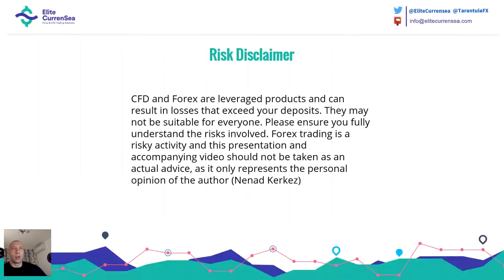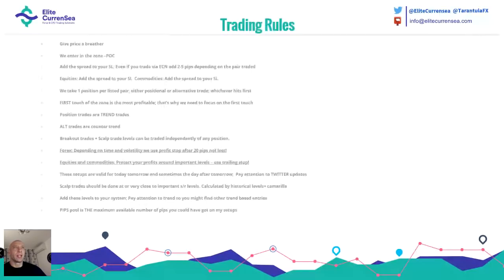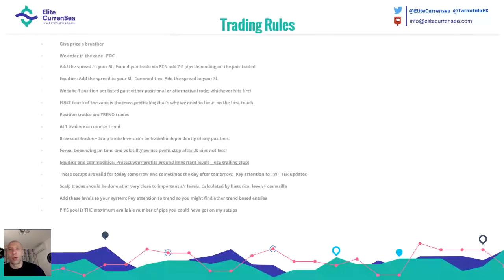Trading rules: you need to give price a breathing room. Always try to enter in the zone — it's called the POC zone. Add a spread to your stop loss. Even if you trade by ECN, add 2 to 5 pips spread depending on pair traded. Also for equities and everything you trade, add the spread to your stop loss. We take one position per listed pair. We either take alternative trade or positional trade. Positional trades are trend trades; alternative trades are counter trend trades. When doing counter trend trades, you should lower your normal risk.